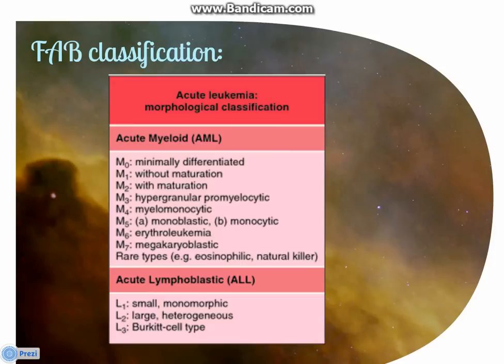FAB classification is a morphological classification which classifies acute myeloid leukemia into eight categories and acute lymphoblastic leukemia into three categories. The eight types of acute myeloid leukemia are: M-0 poorly differentiated, M-1 without maturation, M-2 with maturation, M-3 hypergranular promyelocytic, M-4 myeloid monocytic, M-5 has two stages — first stage monoblastic, second stage monocytic — M-6 erythroleukemia, M-7 megakaryoblastic. For acute lymphoblastic leukemia: L-1 small monomorphic, L-2 large heterogeneous, L-3 Burkitt cell type.